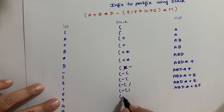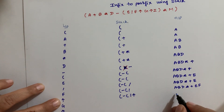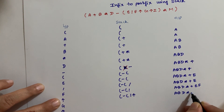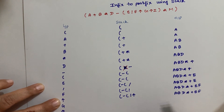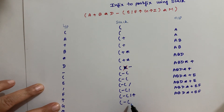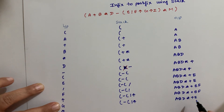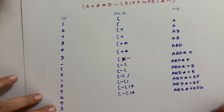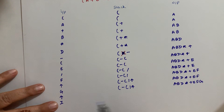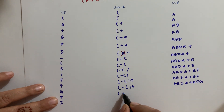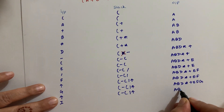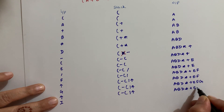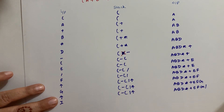Then comes raise to the power — its priority is higher, so it goes to the top of the stack. Now an operand G comes, so it goes to the output. Now the next operator is also raise to the power, and inside the stack there is also raise to the power — same priority. So one pops out and one remains inside.